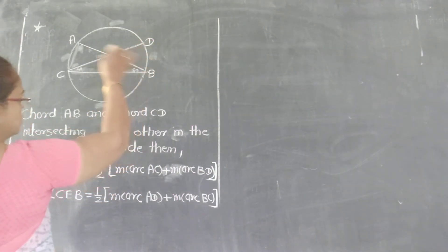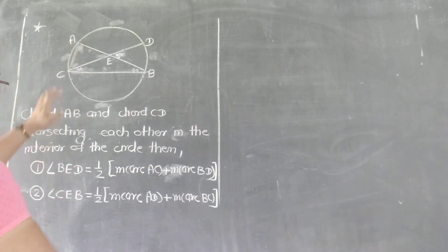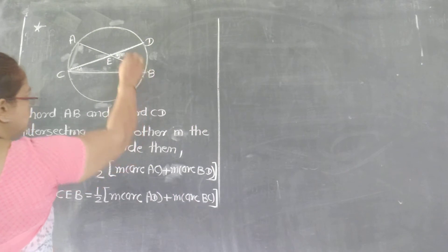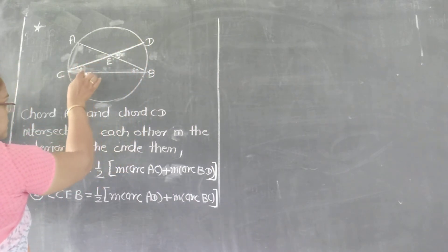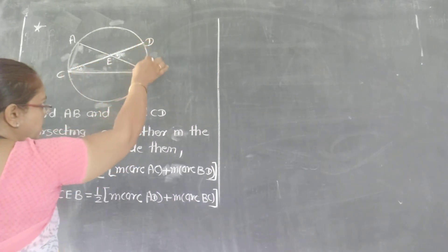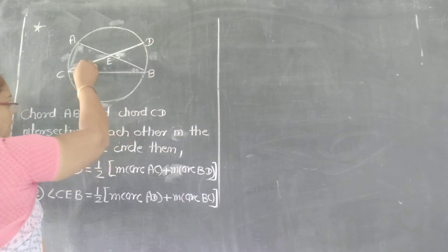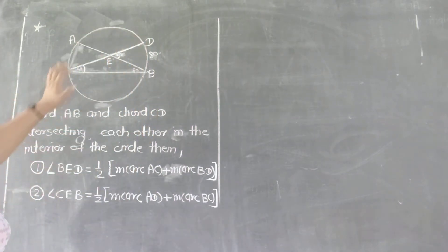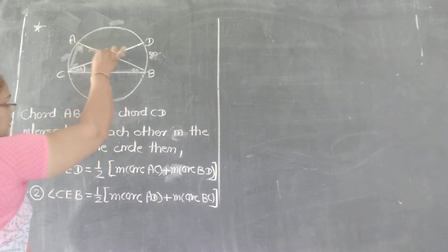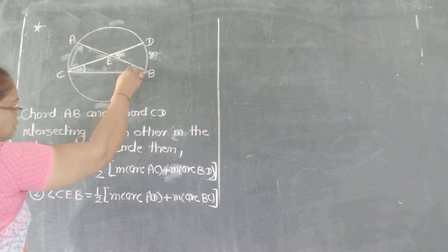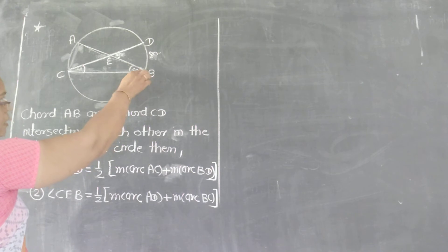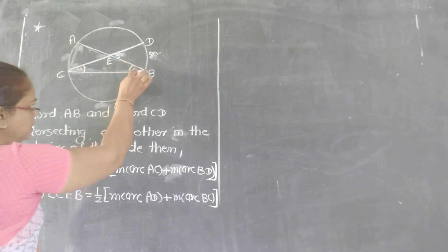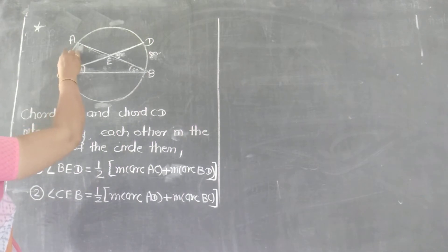Now consider this angle. This angle is an inscribed angle and it intercepts arc R. The corresponding intercepted arc — if this one is 50, then it becomes 100.